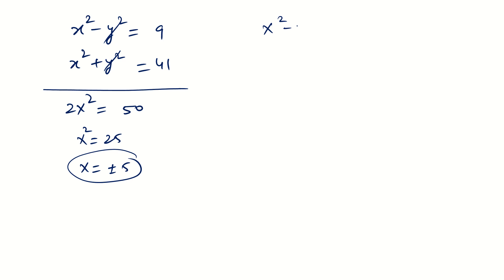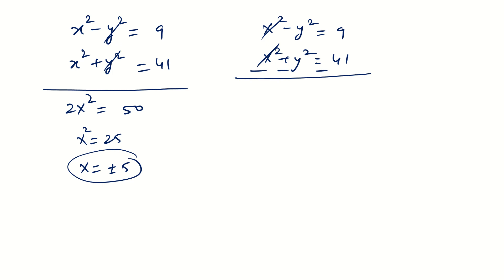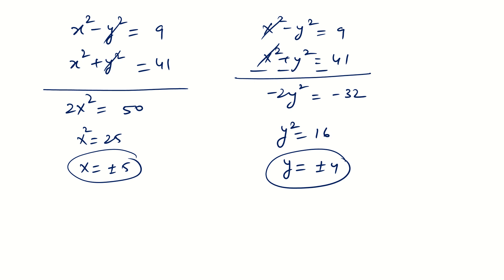Similarly, subtracting equation 1 from equation 3, we get 2y squared equals 32, so y squared equals 16, and y is plus or minus 4. Putting values into x plus iy: if x is 5 and y is 4 we get 5 plus 4i, and if x is negative 5 and y is negative 4 we get minus 5 minus 4i.